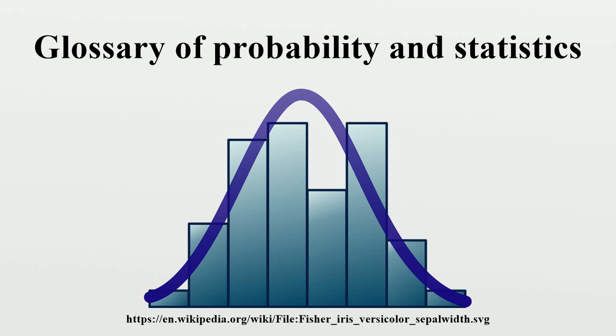Kurtosis: a measure of the peakedness of the probability distribution of a real-valued random variable. Higher kurtosis means more of the variance is due to infrequent extreme deviations, as opposed to frequent modestly-sized deviations.